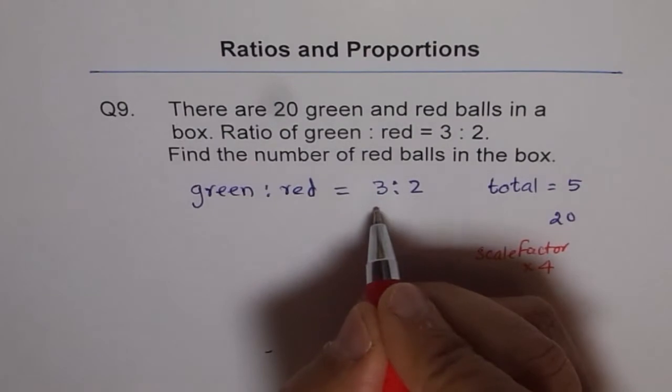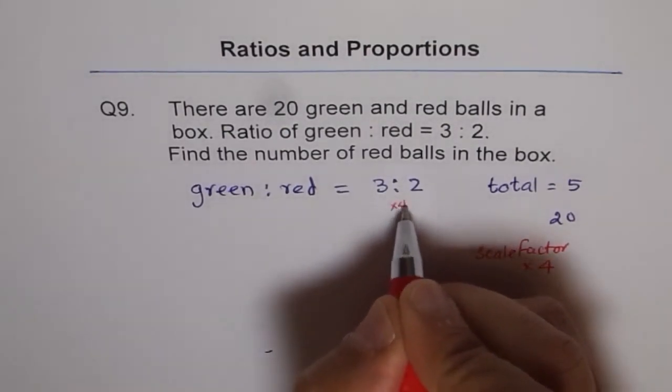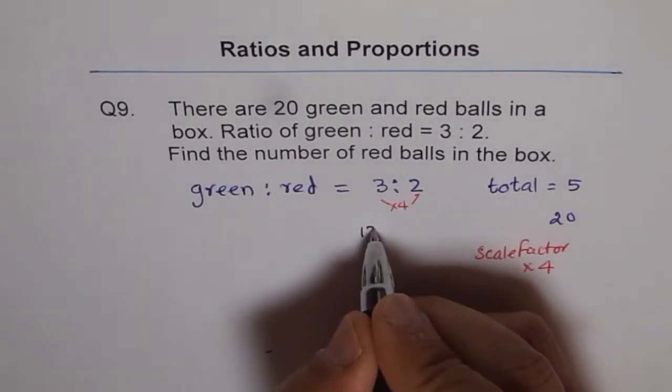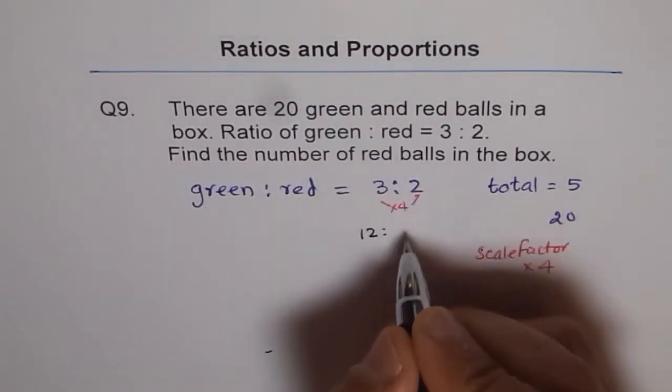So we will multiply both by 4. So we will times 4 both of them. And get our answer. 4 times 3 is 12 and 4 times 2 is 8.